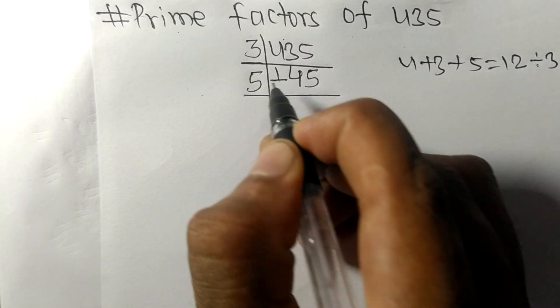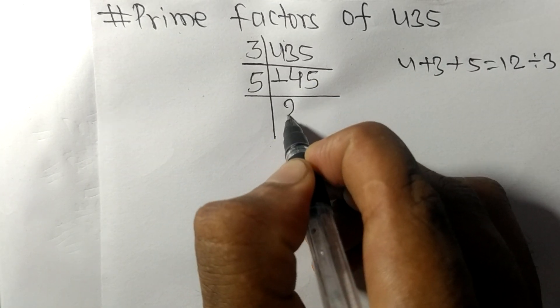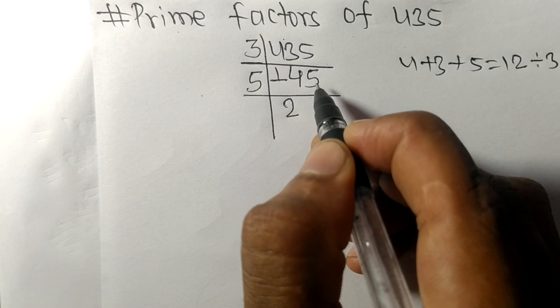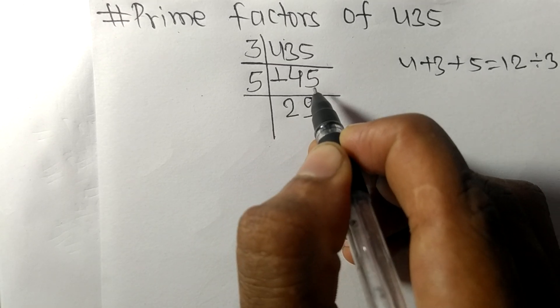Which is divisible by 5. So 5 times 2 mean 10, remainder 4, 4 5 is 45. 5 times 9 mean 45.